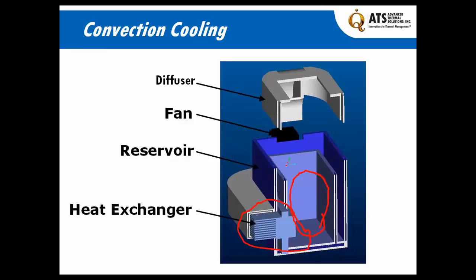A fan blows air through the duct, coming in through the heat exchanger, and through the section view it'll come up through the diffuser section up top. This diffuser section takes the air from the duct, spreads it out over the samples, and creates a barrier between the lab ambient environment and the samples themselves — a cushion of air over the top of the sample to ensure that moisture or heat isn't transferred into the sample.